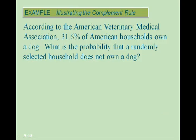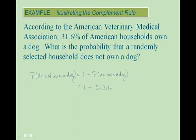Example of the complement rule: according to the American Veterinary Medical Association, 31.6% of American households own a dog. What is the probability that a randomly selected household does not own a dog? P(does not own a dog) = 1 − P(owns a dog) = 1 − 0.316 = 0.684.